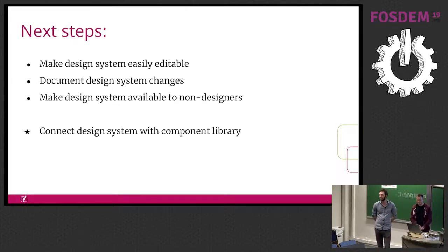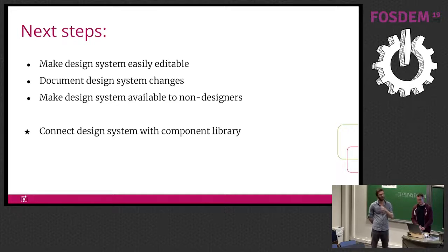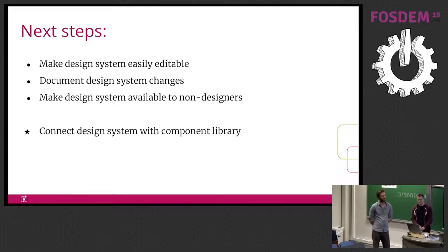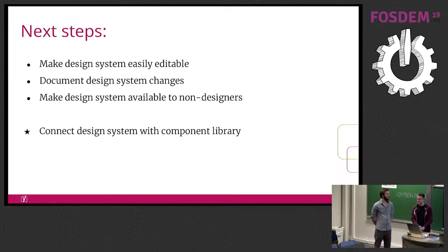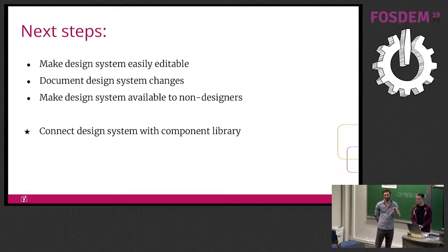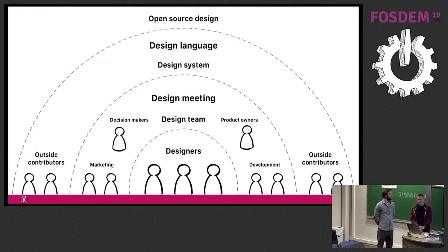We want to document the changes — to know where we came from, why we make these choices, the philosophy behind the colors and button types. Then eventually we want to make it available to people outside our team: marketing could look at the design system and pick components that will immediately look right. Even better — and we're still figuring this out — is if we can connect it to the React components we use in our products, so the design is also reflected in what developers actually build. That's how we hope to reach open source design for our company.